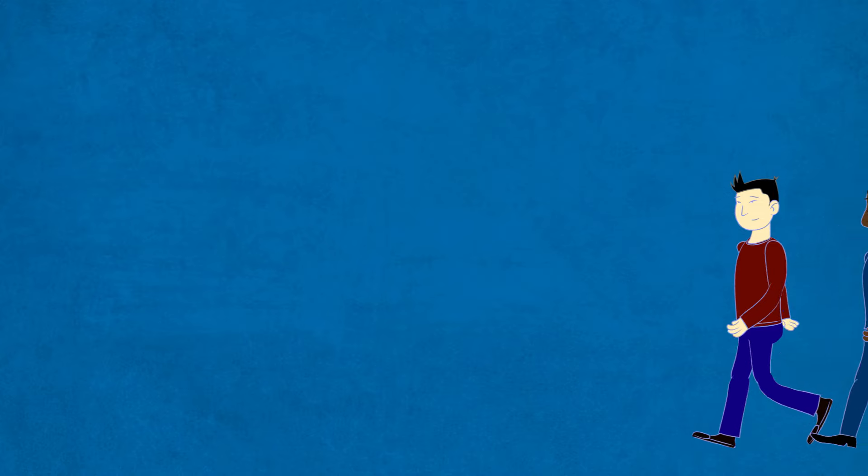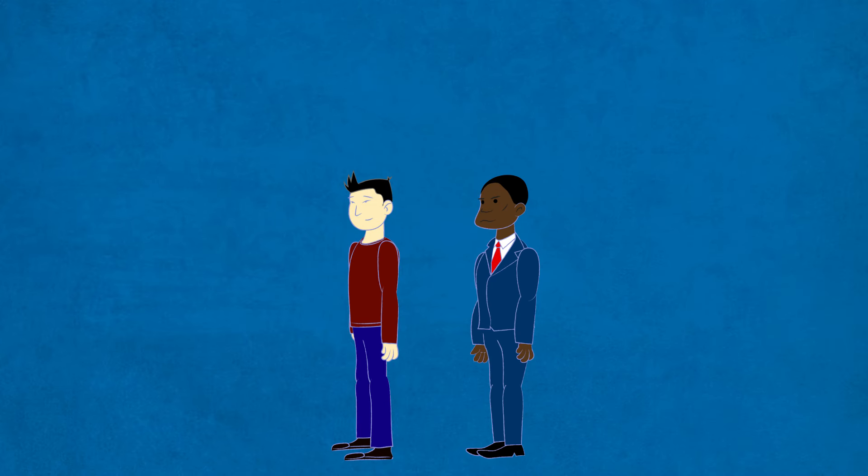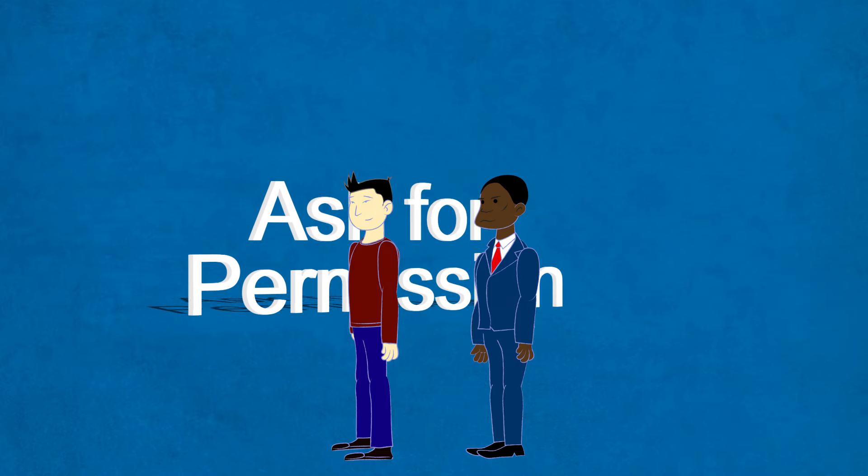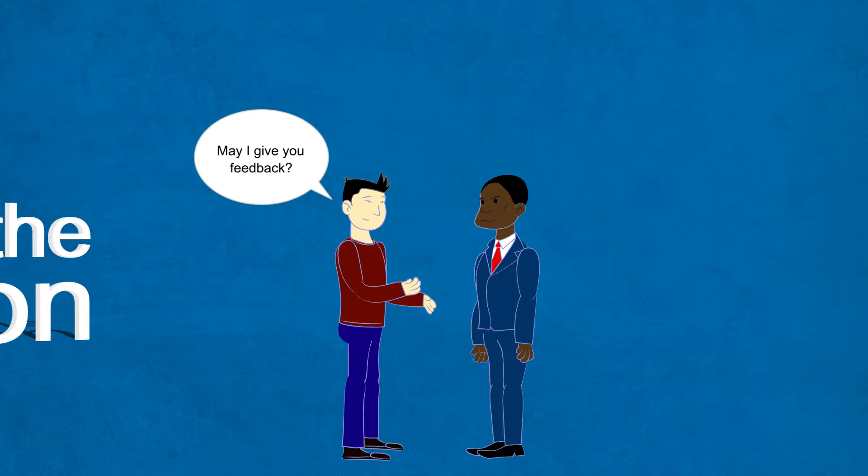SBI helps you deliver and receive feedback in a specific way. Here's how to give feedback according to the SBI method. The first step in SBI is to get permission to give feedback. That's as simple as saying, may I give you feedback?